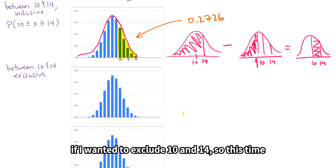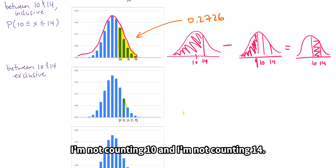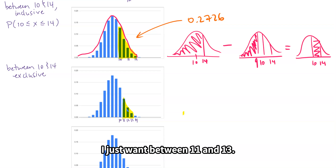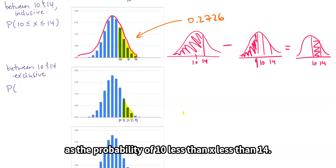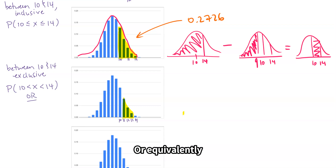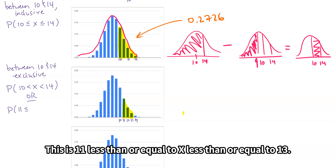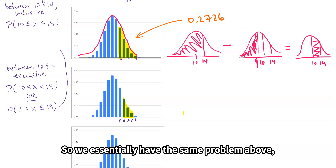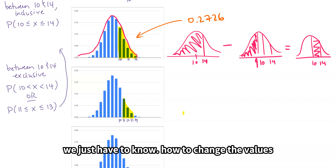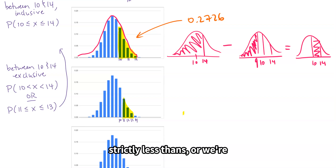Related to that, if I wanted to exclude 10 and 14 — so not counting 10, not counting 14, just between 11 and 13 — we can look at this as P(10 < x < 14), or equivalently for discrete probability distributions, P(11 ≤ x ≤ 13). So we essentially have the same problem as above; we just have to know how to change the values. If we're excluding, we go one less.